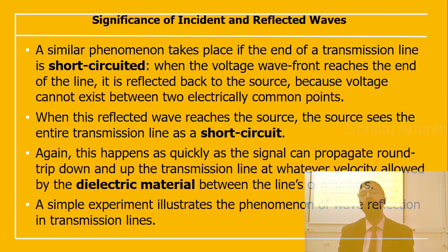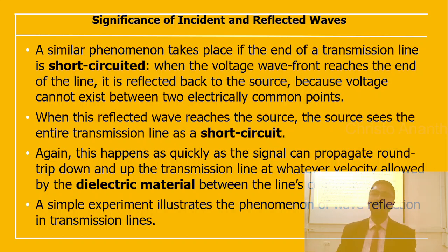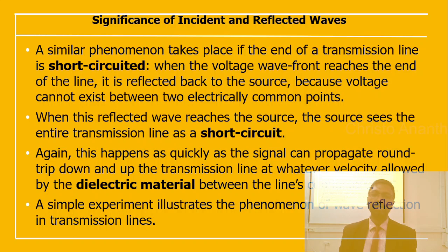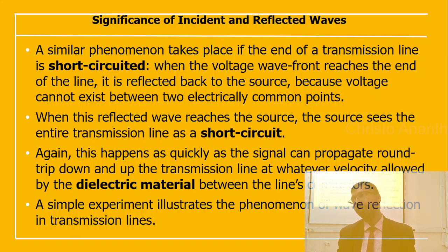A similar phenomenon takes place if the end of the transmission line is short-circuited. When the voltage wave front reaches the end of the line, it reflects back to the source because voltage cannot exist between two electrically common points. When this reflected wave reaches the source, the source sees the entire transmission line as a short circuit. This happens very quickly at whatever velocity is allowed by the dielectric material between the conductors.